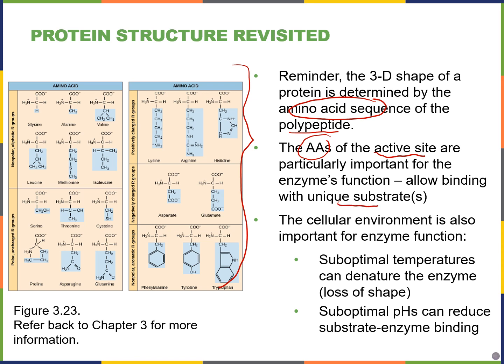Temperature is important because if you lower or raise the temperature too much, the three-dimensional shape of the protein might change. Especially if it gets too warm, the protein might denature or lose its three-dimensional shape. Different pH values can also change the state of the active site — it might get rid of a negative charge or add a positive charge, which can minimize the bonding strength between the substrate and enzyme.